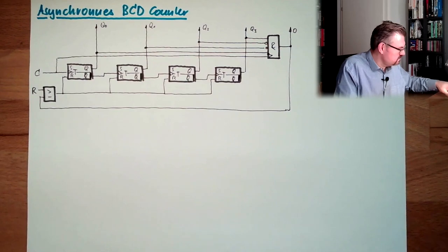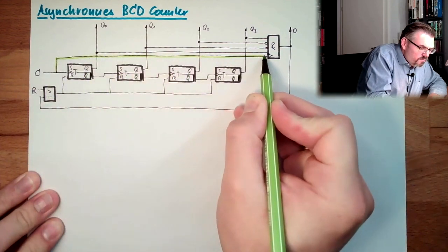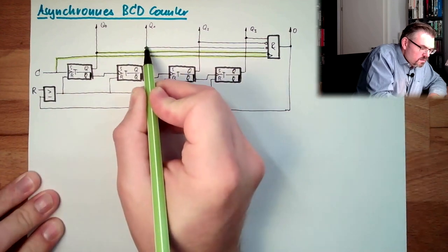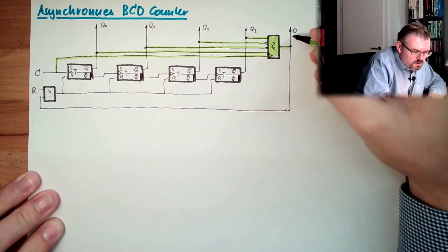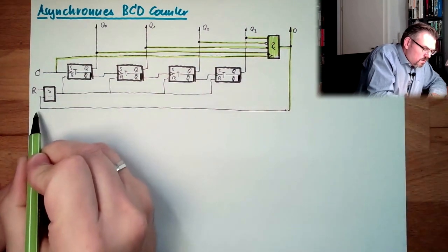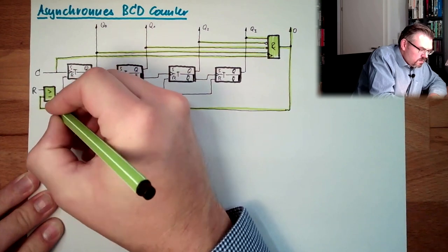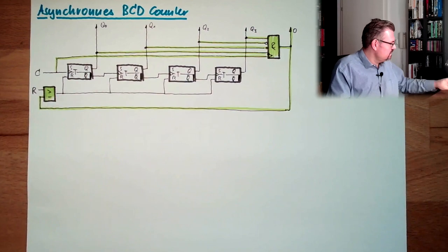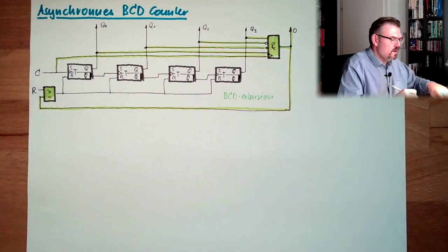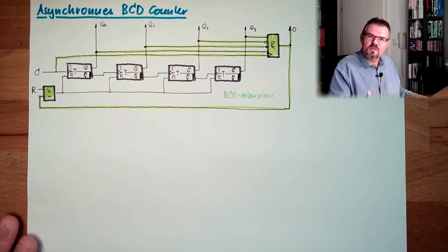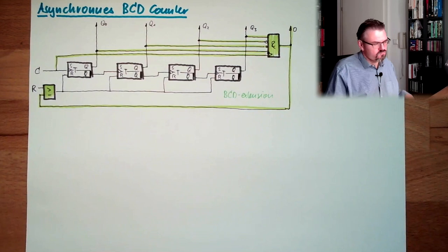So everything I'm marking now in green, this is purely for BCD. So this is the BCD extension to our asynchronous upwards counter. Everything else is the same. This is the BCD part, we'll call it BCD extension. And now we can connect this directly to a seven segment display or whatever, and this seven segment will count in decimal numbers from zero to nine and then already next number and so on.